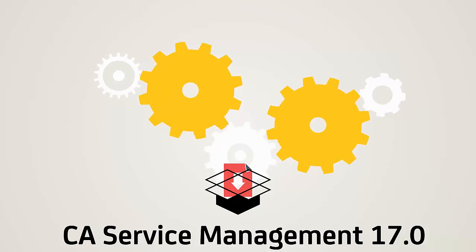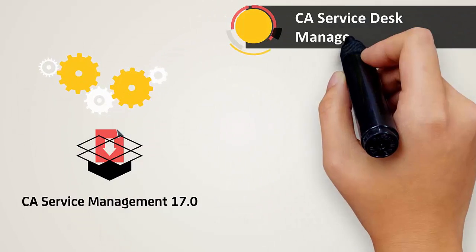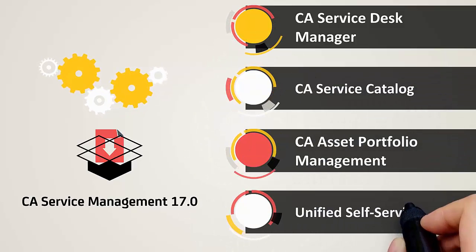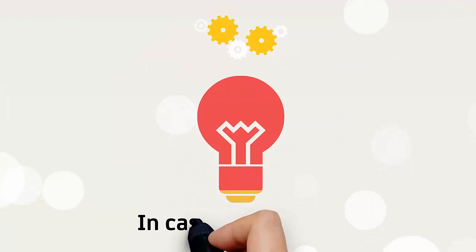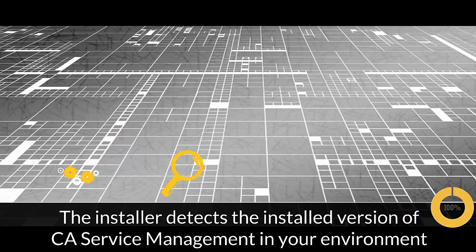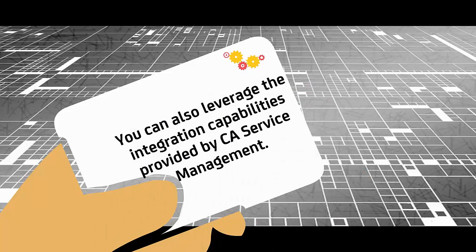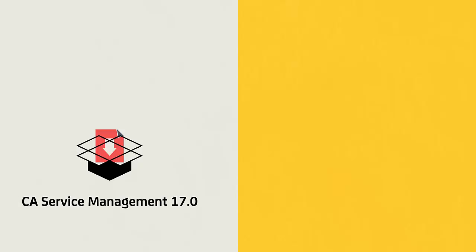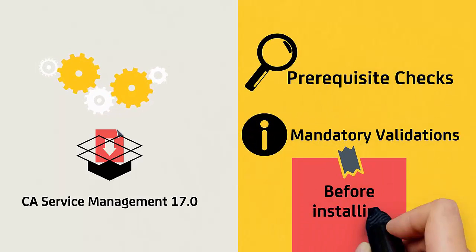The CA Service Management 17.0 Common Installer provides installation for CA Service Desk Manager, CA Service Catalog, CA Asset Portfolio Management, and Unified Self-Service. In case of upgrades, the installer detects the installed version of CA Service Management in your environment and upgrades it to CA Service Management 17.0. You can also leverage the integration capabilities provided by CA Service Management. The installer performs the prerequisite checks and mandatory validations before installing the products.